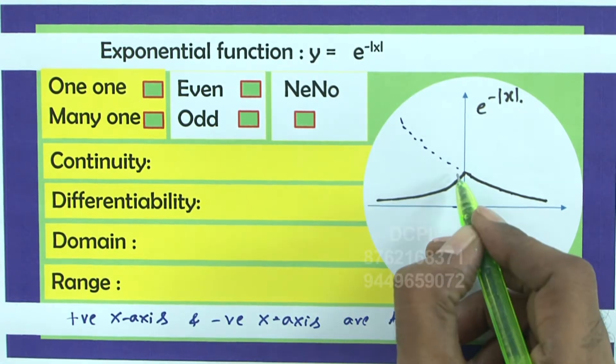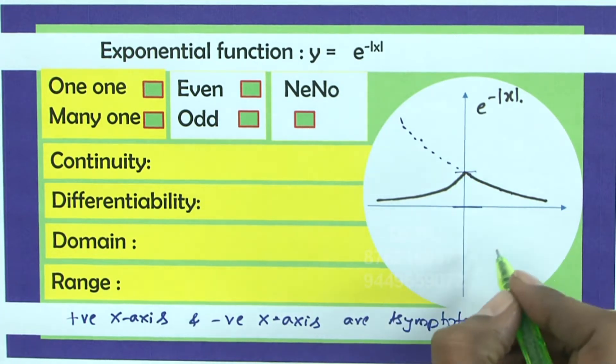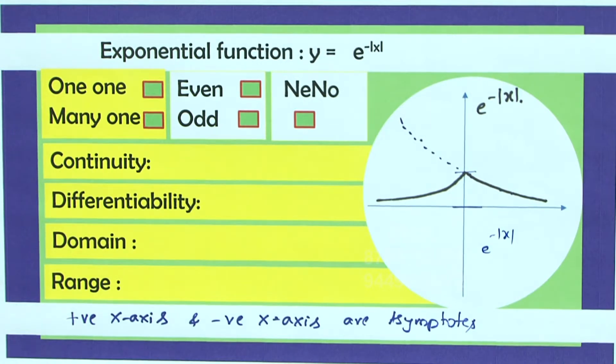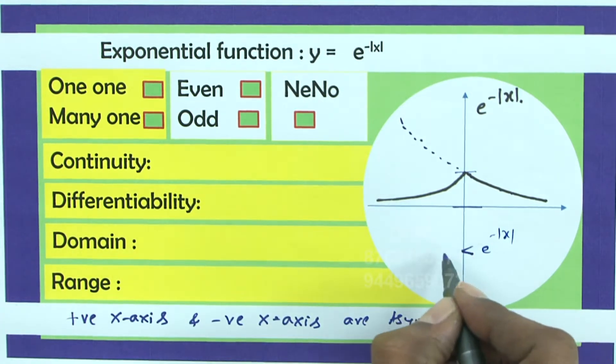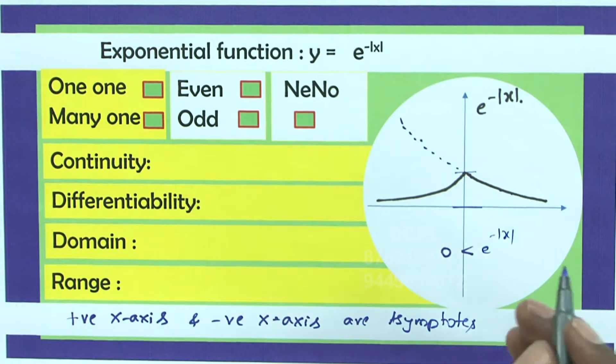And the graph exists between 0 and 1 only that we can see here. e power mod x lies between e power minus mod x. This is greater than 0 and of course never become 0 and less than 1 and equal to 1.